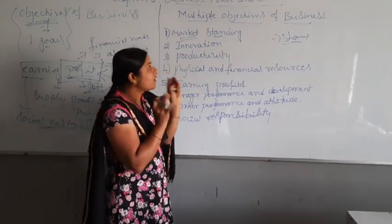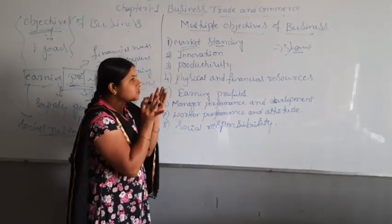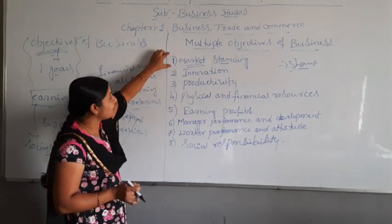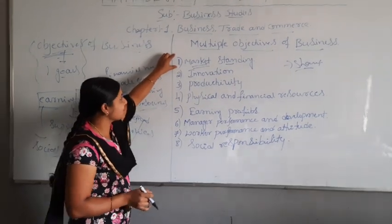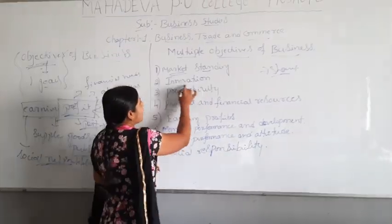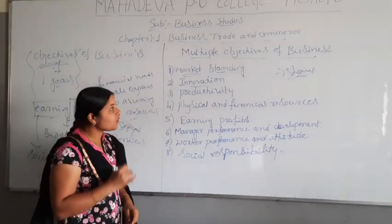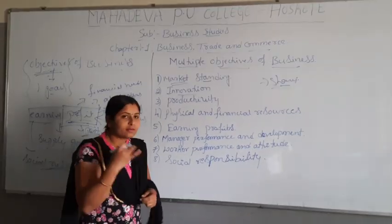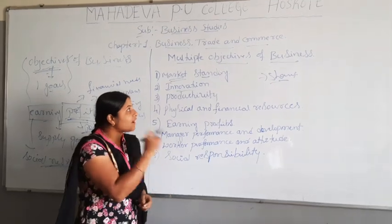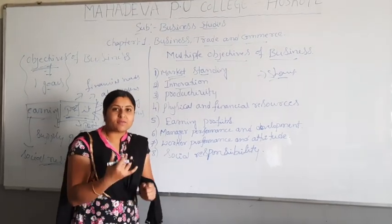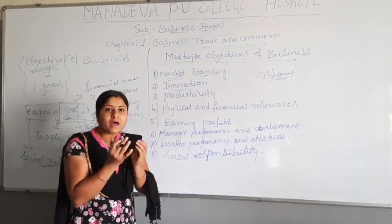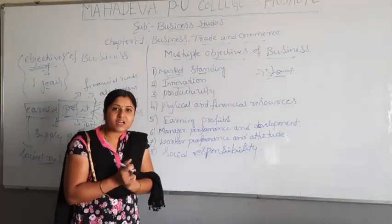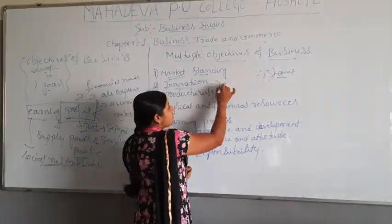Market standing means putting your group strong into the marketplace. This is another objective of business. The next one is innovation. Innovation is an objective of business, and it is very important to survive in the marketplace. At the time of trying to survive, we make certain innovations and conduct various innovative activities through products and services.